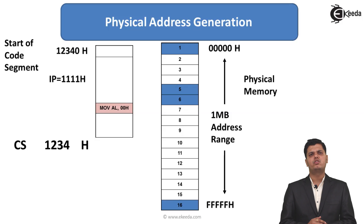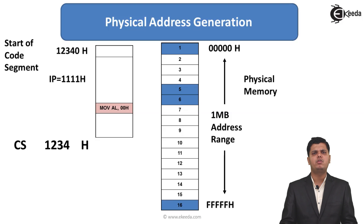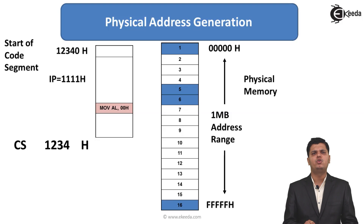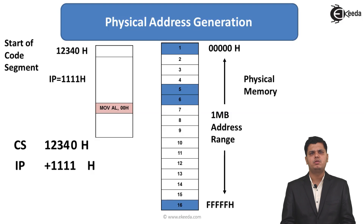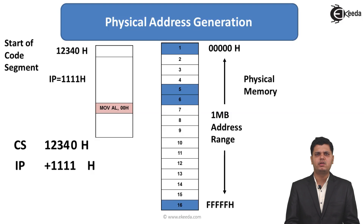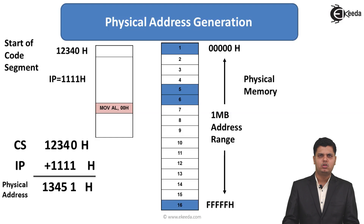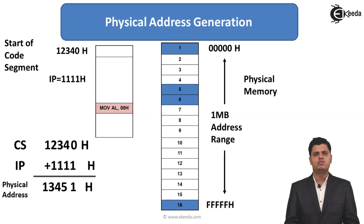We know the starting address of the code segment and the instruction pointer. The code segment register stores the upper 16 bits of 12340H, which is 1234H. As discussed, 4 zero bits are appended by the bus interface unit, giving 12340H. The contents of the instruction pointer, 1111H, are then added to that. The resulting actual 20-bit physical address is 13451H.